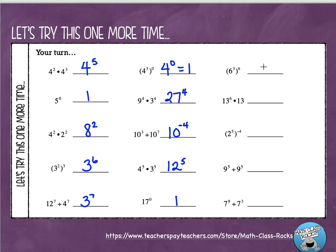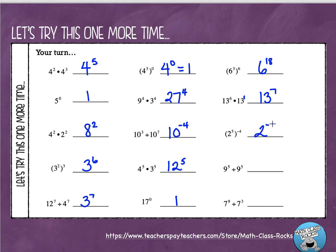Six to the third to the sixth is a power to a power — keep the base six, multiply the exponents: six to the eighteenth. Be careful with the next one: this plain thirteen really has an exponent of one — don't forget that. Same base, different exponents, multiplication — keep the base thirteen and add: six plus one is seven, giving thirteen to the seventh. Next: power to a power — keep the base, multiply the exponents: five times negative four is negative twenty. Then: nine to the fifth divided by nine to the fifth — same base, subtract exponents: five minus five is zero, and any number to the zero power equals one.